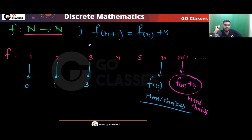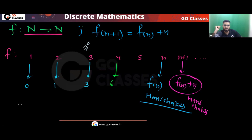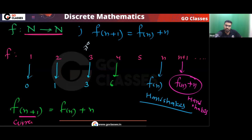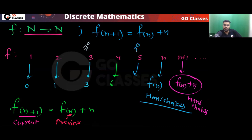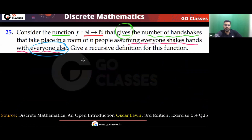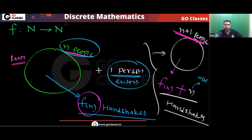For example, f(5) will be f(4) + 4, which gives 10. And f(4) = f(3) + 3 = 6. This is a good and interesting question. This type of question will come in the GATE exam and similar competitive exams.